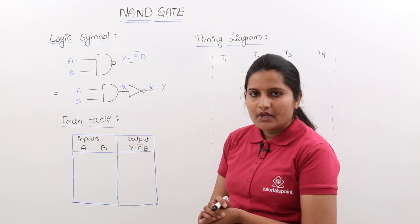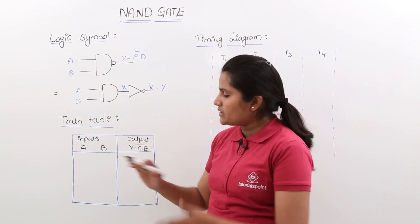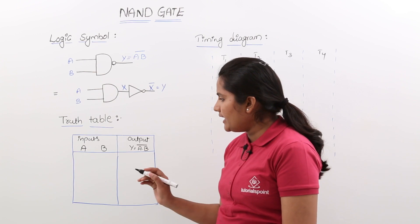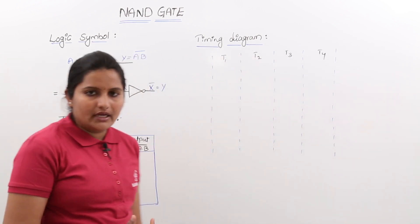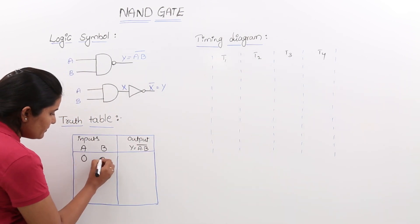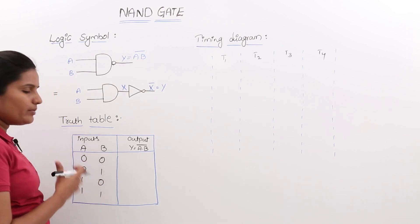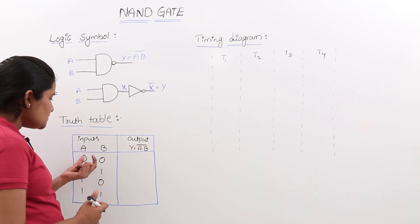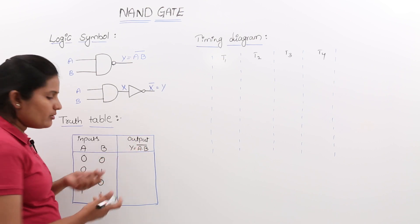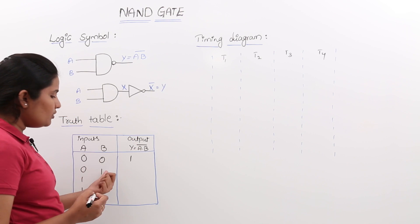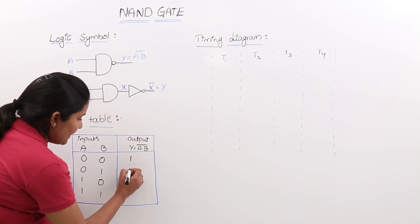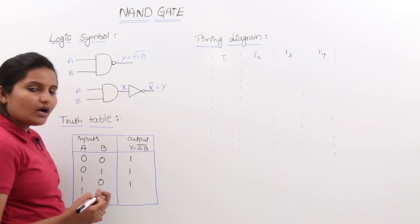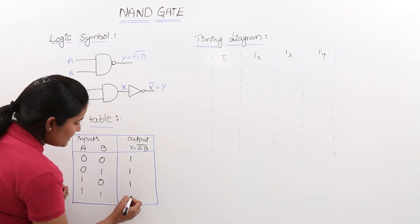Coming to the truth table, we are listing all input and output combinations. With 2 inputs and 1 output, where output equals A into B whole bar, we have 4 combinations: 00, 01, 10, and 11. For 0 into 0, result is 0 but complemented gives 1. For 0 into 1, result is 0 complemented gives 1. For 1 into 0, multiplication is 0 complemented gives 1. For 1 into 1, multiplication is 1 complemented gives 0.